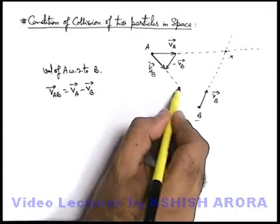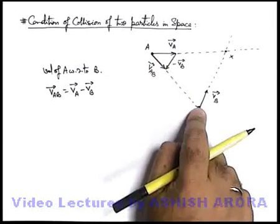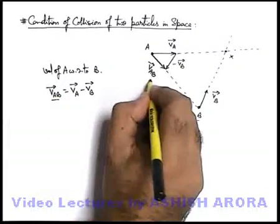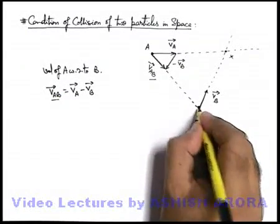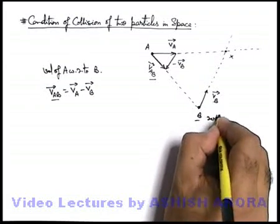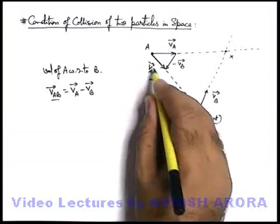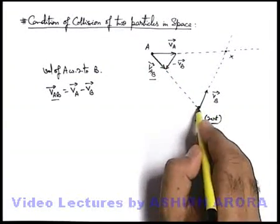If this direction is exactly toward the point B, then we can say A is going to collide with B. Or if we are finding velocity of A with respect to B, it is the velocity of A as seen by B if it is considered at rest. If it is at rest, A is going to collide with B only when its relative velocity is directed toward point B.